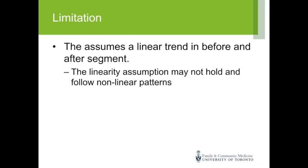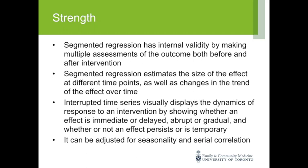There is a restriction in that we assume the models are linear. If the relationship is non-linear, we have to use a non-linear model — I will introduce one in this talk. More complex models are also possible. Segmented regression has several strengths as a powerful statistical tool for assessing intervention impact, particularly when the relationship is linear and the outcome is reasonably normally distributed. Otherwise, we fit appropriate models for count or binary outcomes.